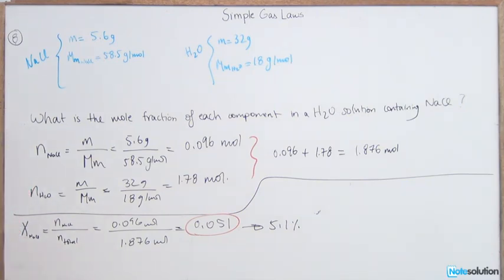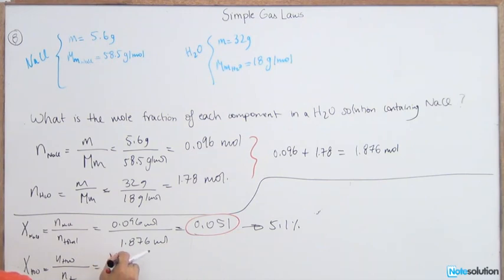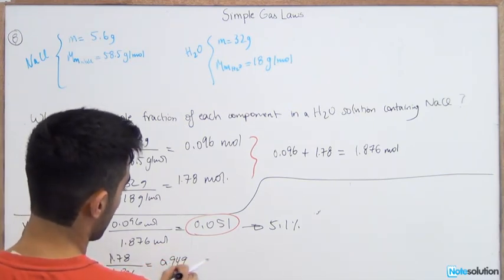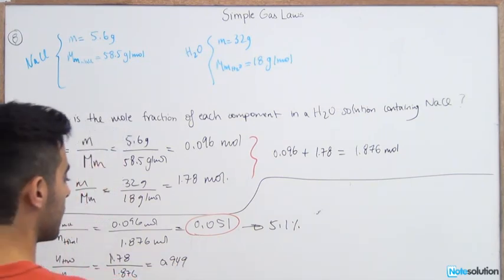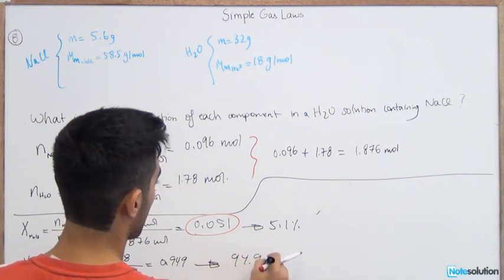Let's do it the normal way as well. The mole fraction of H2O equals the number of moles of H2O over the total number of moles: 1.78 over 1.876, which gives you a mole fraction of 0.949, or 94.9% if converted to percentage.